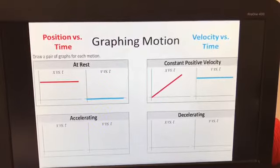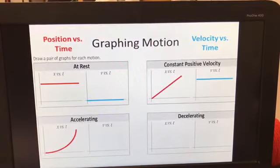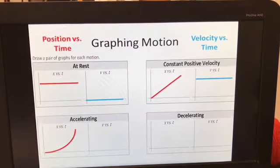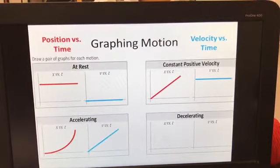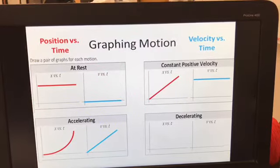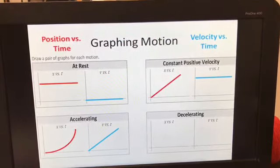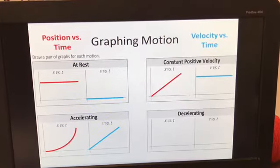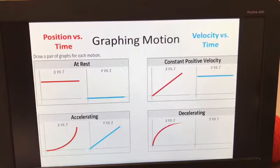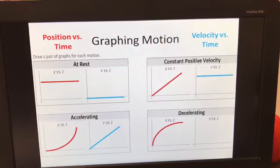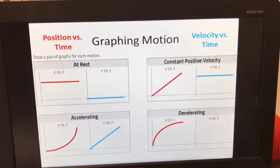Acceleration position versus time is curved, starts off flat and gets steeper. Accelerating velocity versus time is linear with slope. The greater the rate of acceleration, the steeper the slope. Decelerating position versus time curves with the other direction, starting off steep and leveling out. And velocity versus time is a negative linear slope.